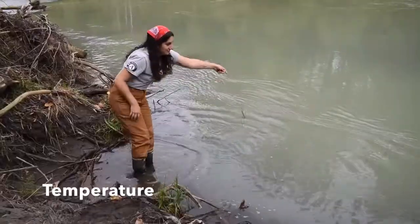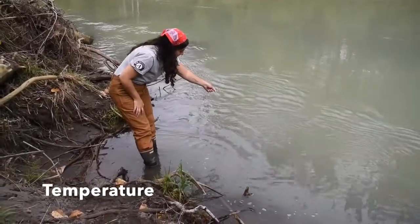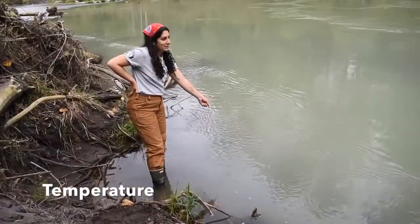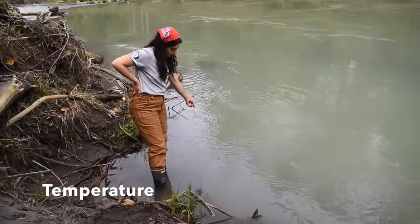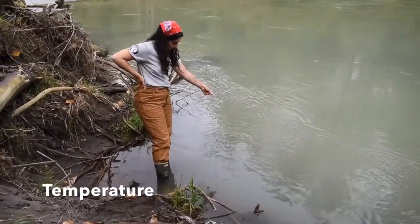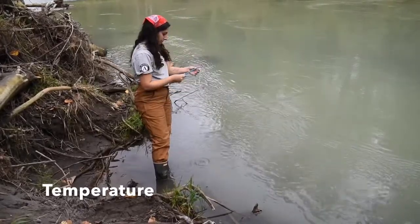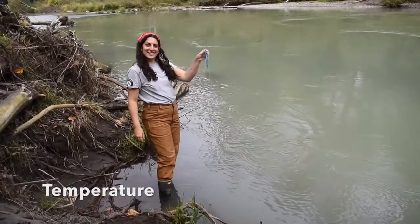The first thing we need to do is measure the temperature of the water, so I'm going to hang this thermometer in the river for one minute. Salmon want cold water less than 12 degrees Celsius. The temperature of the water reads 14 degrees Celsius.